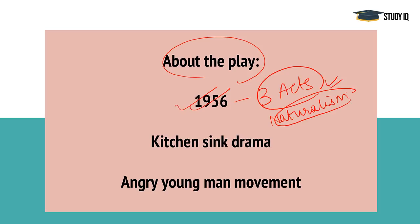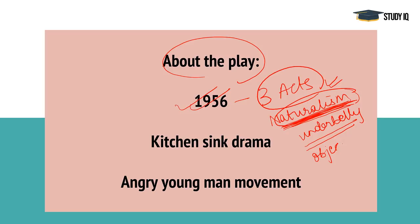Naturalism means depicting the underbelly of life — things like poverty, slums, and the darker aspects of society that we would rather not confront. Naturalism shows all of these things objectively, without sympathy. It objectively shows everything that exists in our society. And this play was a naturalistic play.